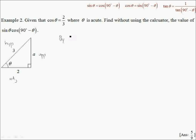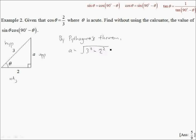To find A, we will use Pythagoras' theorem. By Pythagoras' theorem, A is equal to the square root of 3 squared minus 2 squared, which is simply the root of 5.